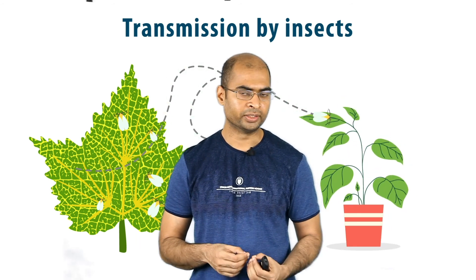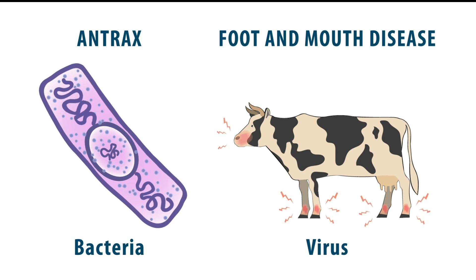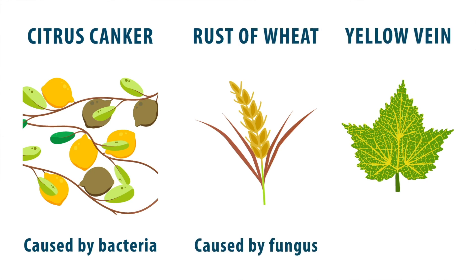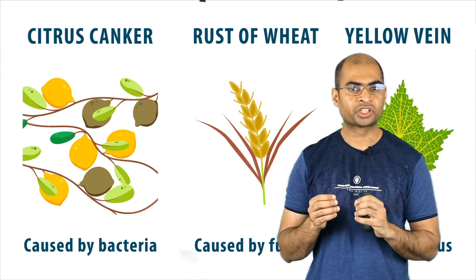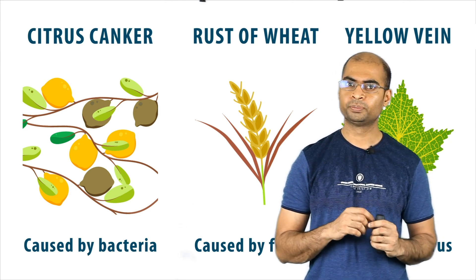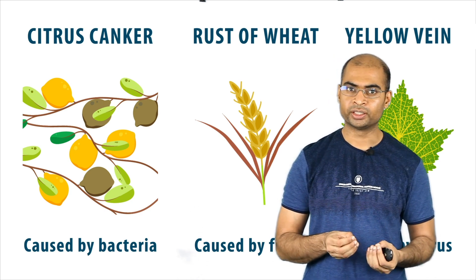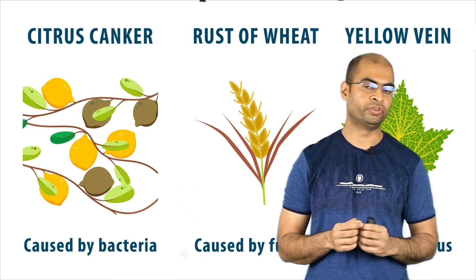To summarize, we saw diseases like anthrax and foot and mouth disease that affect cattle. We also saw some diseases in plants like citrus canker, rust of wheat, and yellow vein mosaic of Bindi. In the next video, let's take a break from these scary harmful microbes and switch gears to look at some helpful ones, starting with antibiotics — a life-saving medicine that cures bacterial infection.